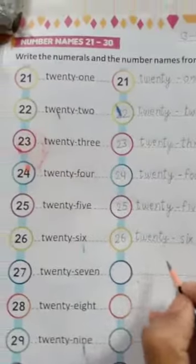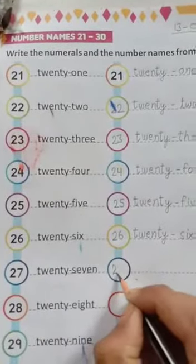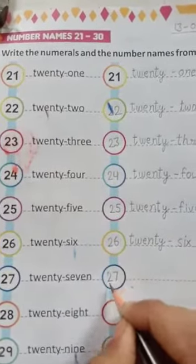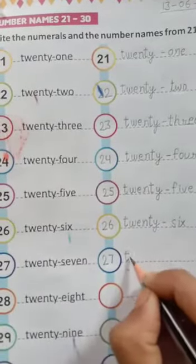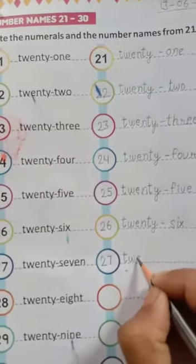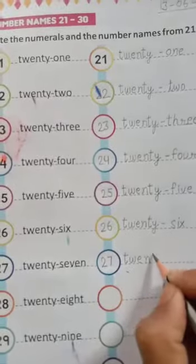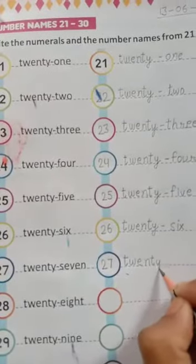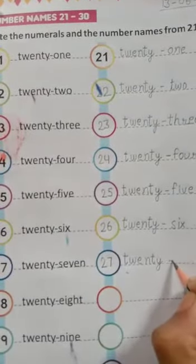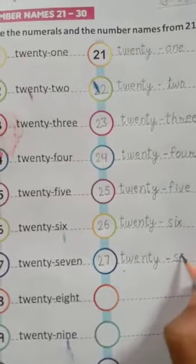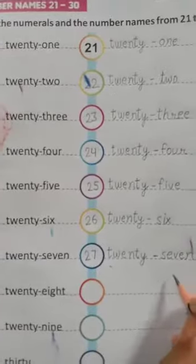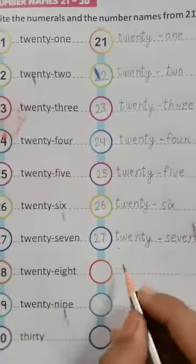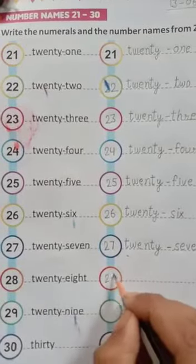Watch carefully students and repeat after me. 27: T-W-E-N-T-Y, 20, S-E-V-E-N, 27. Now next is 28.